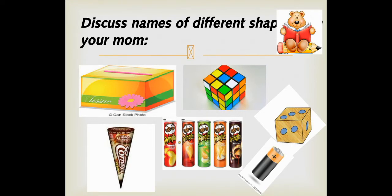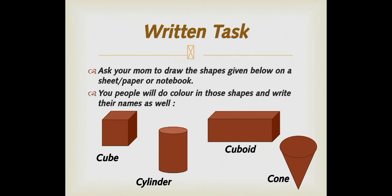Now discuss the name of different shapes with your mom. As you can see many objects on the page, there's a tissue box, an ice cream cone, packs of chips, a block, a dice. So find out these objects and discuss their shapes with your mom.